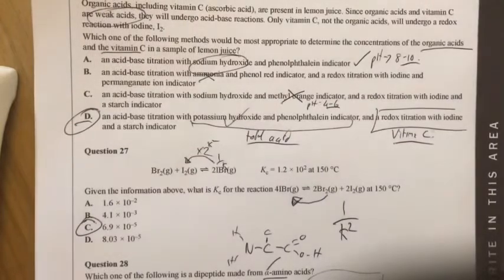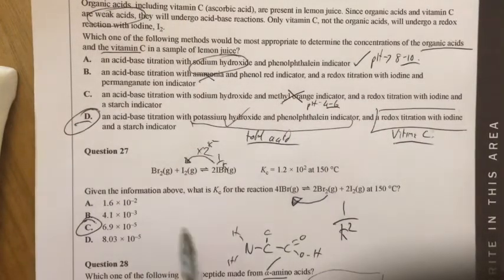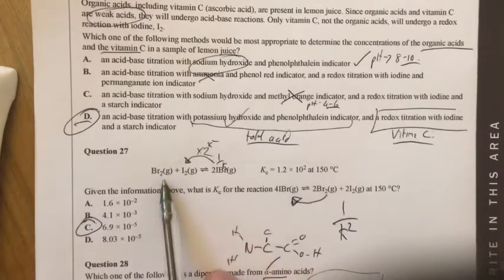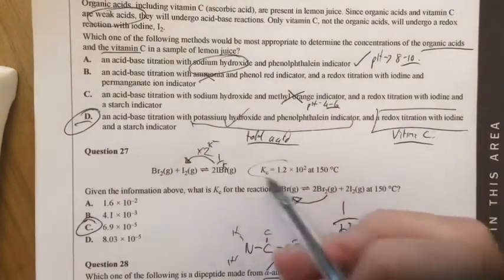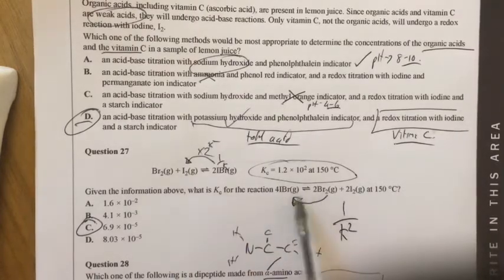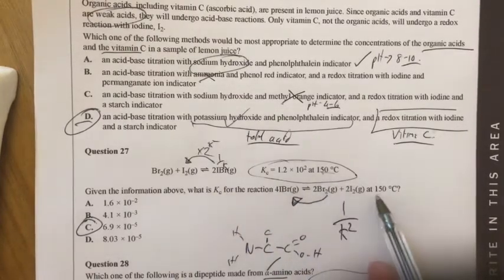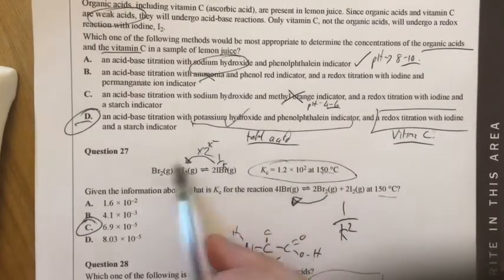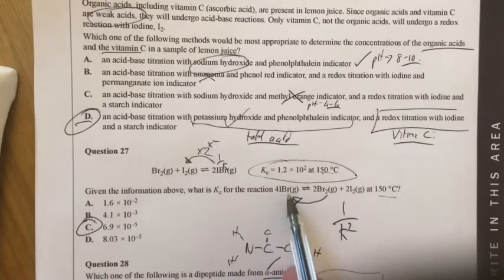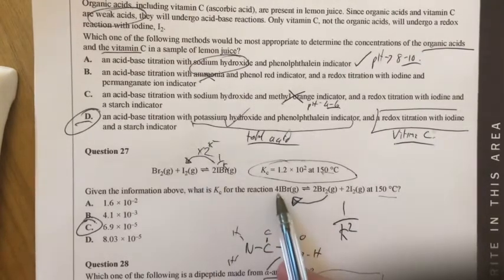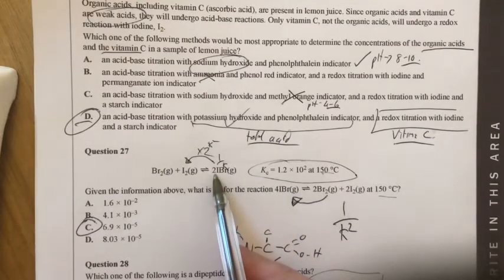I just realized that it wasn't recording for these last two questions. Question 27. This is an equilibrium reaction and we have a Kc value equilibrium constant. What we need to do is find the equilibrium constant for a modified version of this reaction at the same temperature. So what I had to look at is what happened to this equation and I realized that it was reversed so the IBr is now as a reactant, not a product, and that it was also doubled. So therefore, I've got four IBr, not just two IBr.